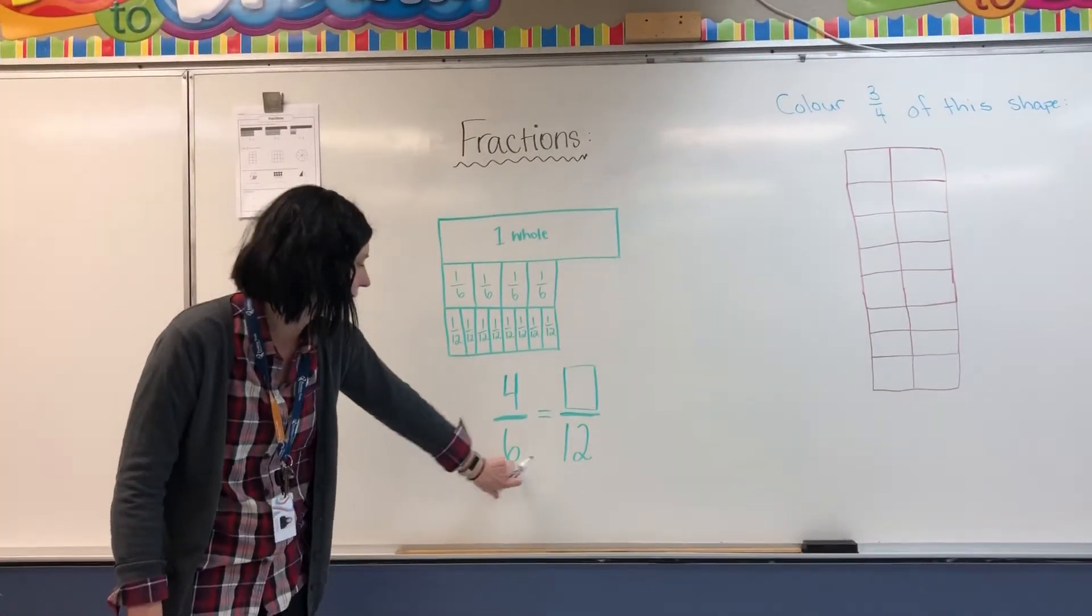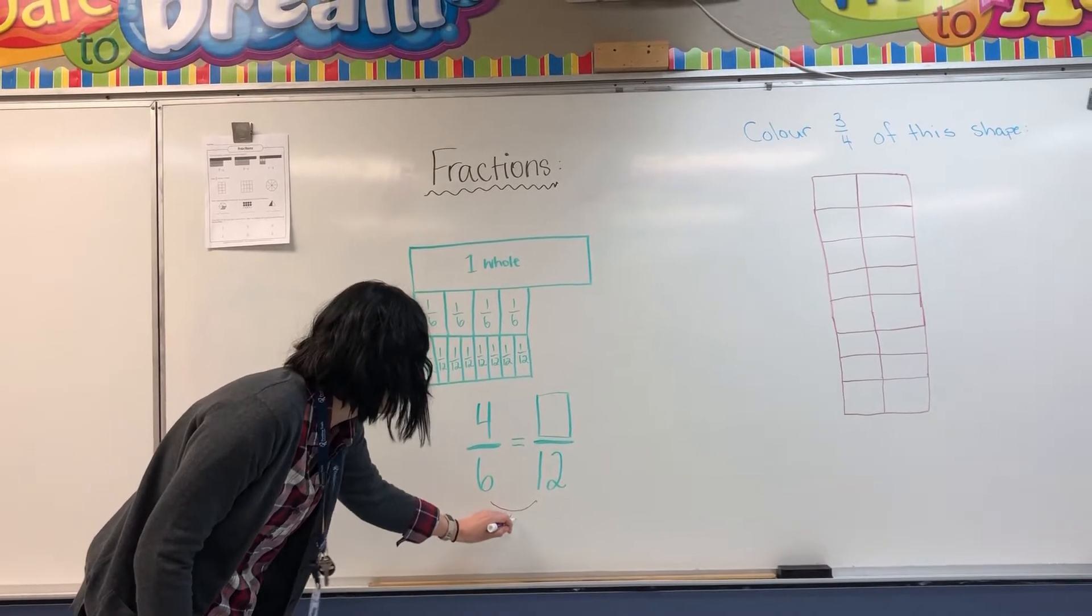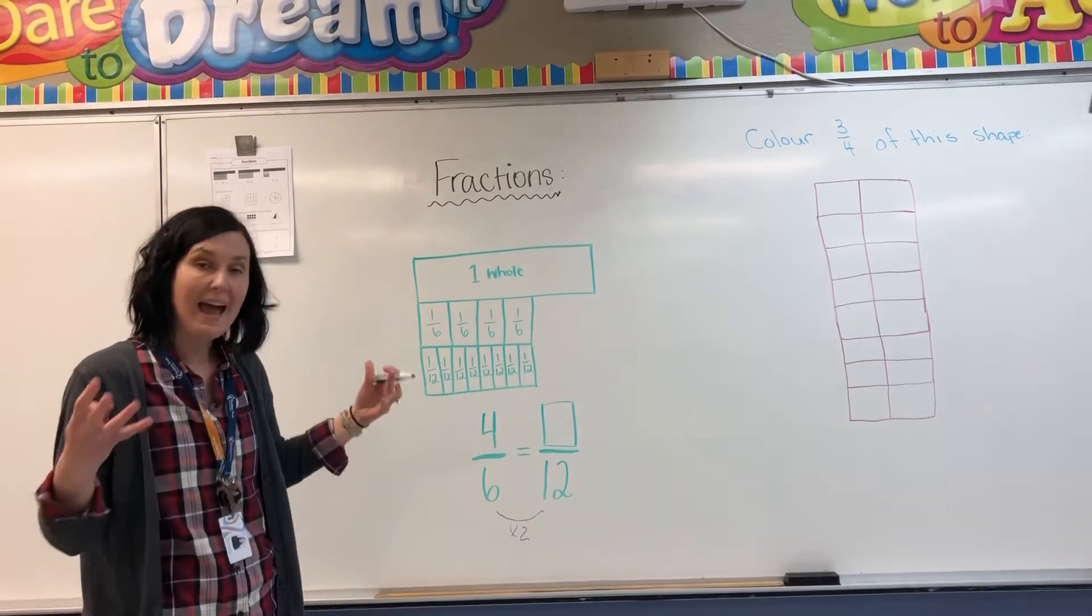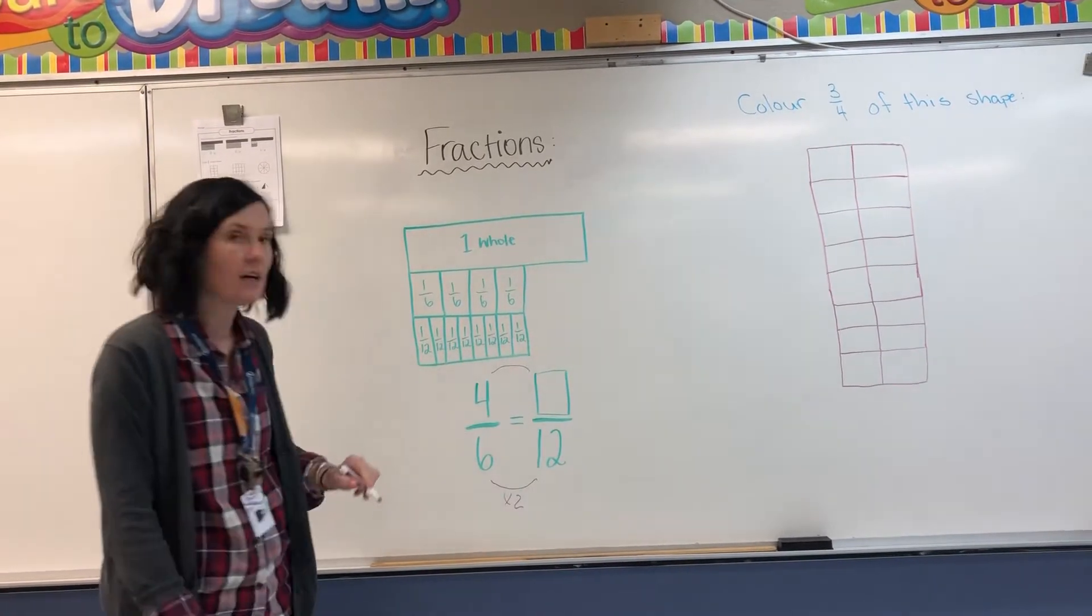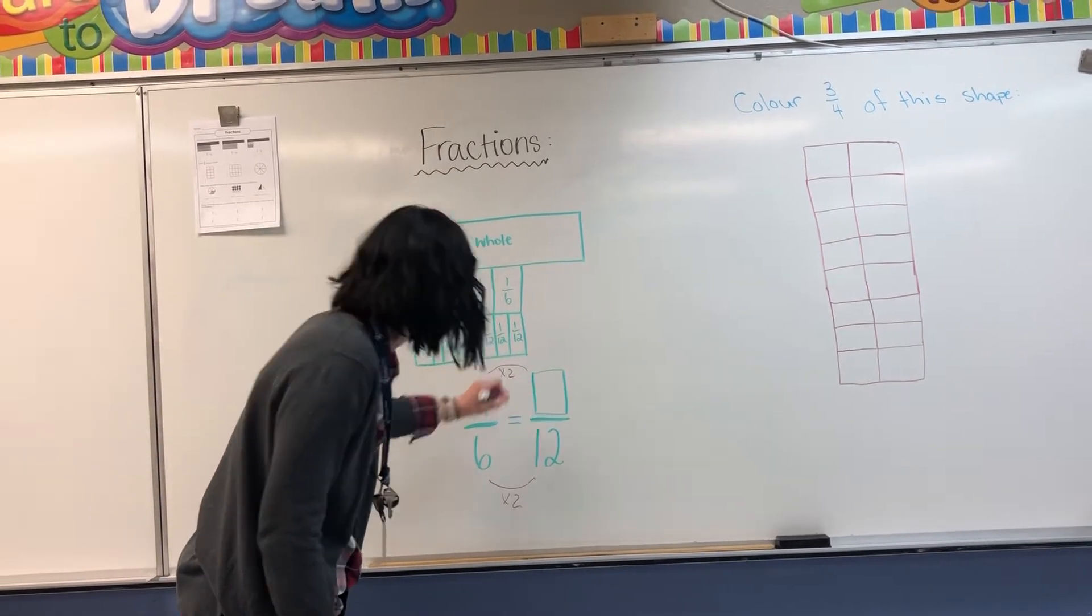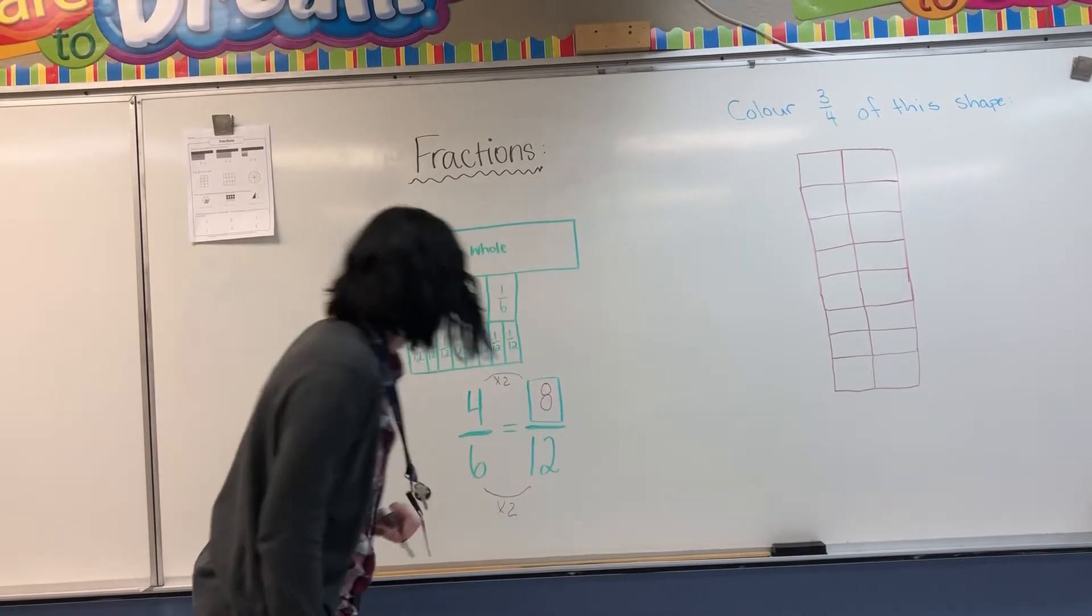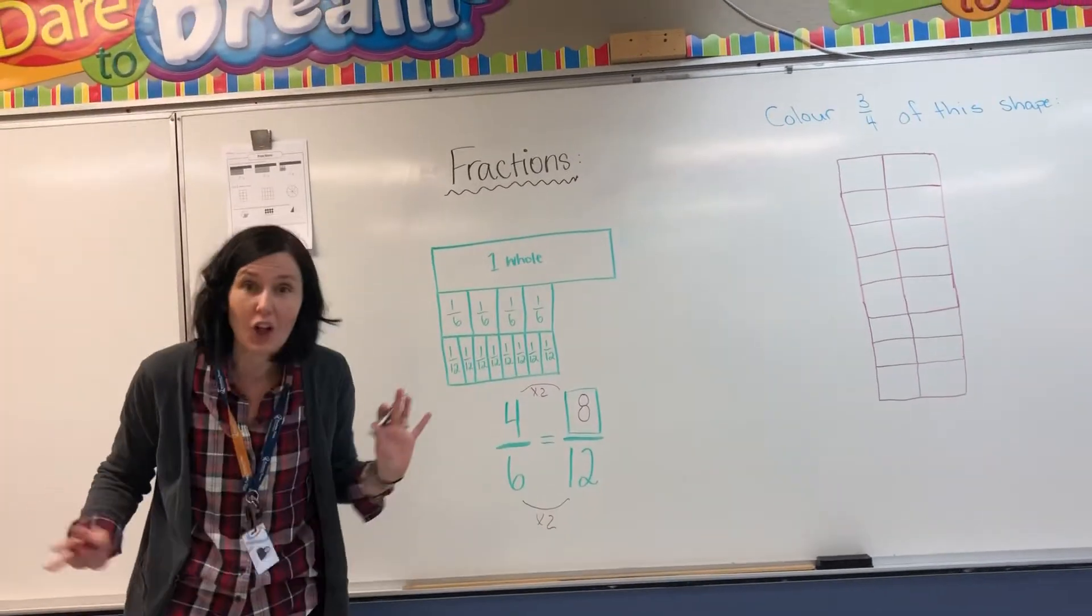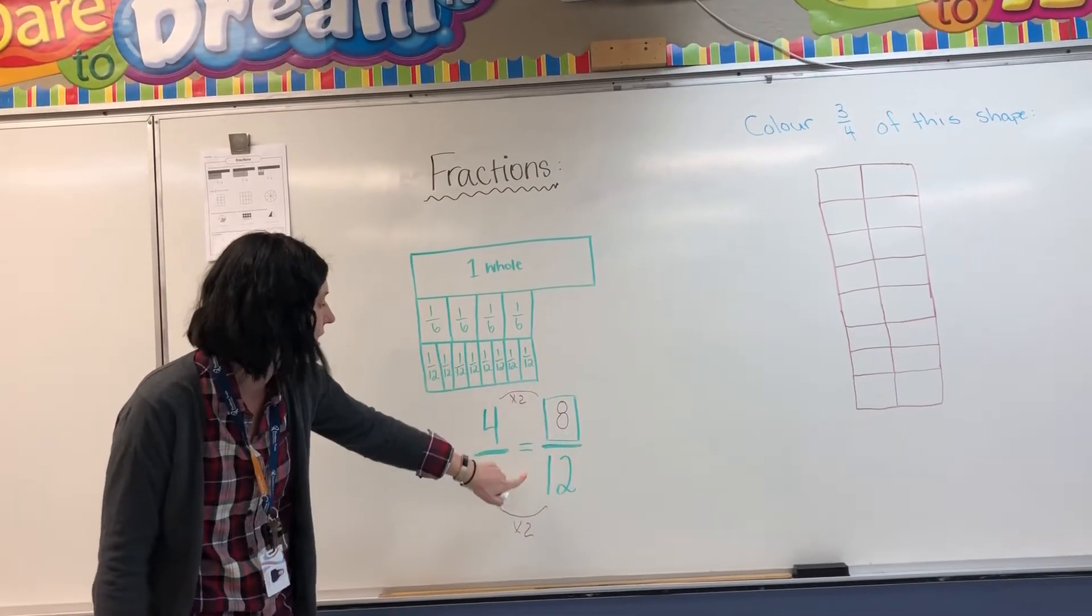How do we get from six to 12? We multiply by two. What do we get when we then multiply the top by two? Because whatever we do to the denominator, we have to do to the numerator as well. So if we multiply this by two, what's four times two? It's eight. Don't mind the construction sounds. Just means your school is going to be beautiful when you come back. So four sixths is equivalent to eight twelfths.